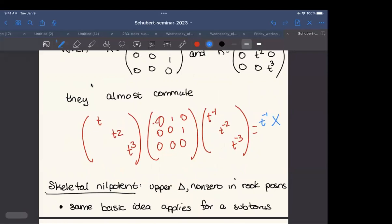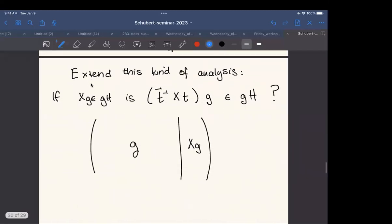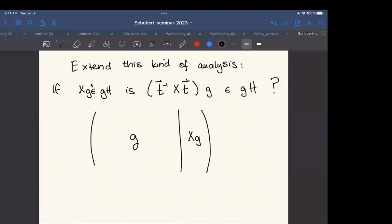So in fact, whenever you have a nilpotent that is strictly upper triangular and it's nonzero only in rook positions, meaning a nonzero entry only in a single row, one entry of each row, one entry of each column, then we can actually find similarly another torus that acts in this sort of almost commuting multiplies by a scalar fashion. And then we can start extending this same kind of analysis to just a more general set of matrices. So if G satisfies the Hessenberg condition, so XG is in GH, then what about if we act on X by some torus element?